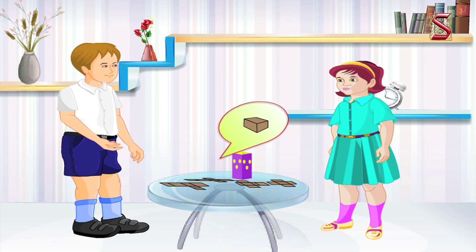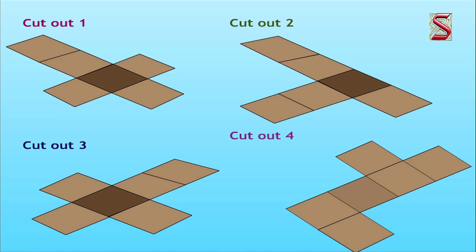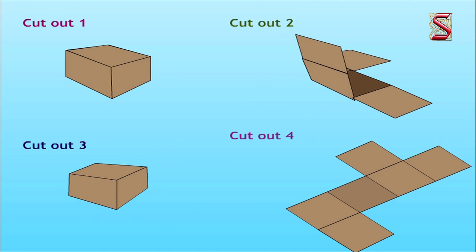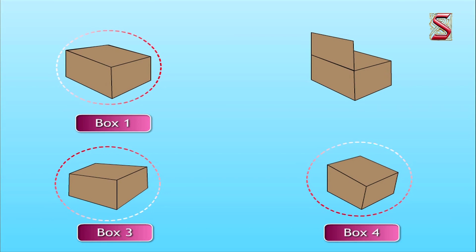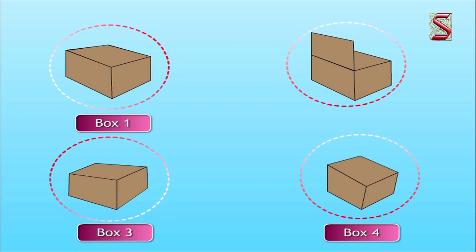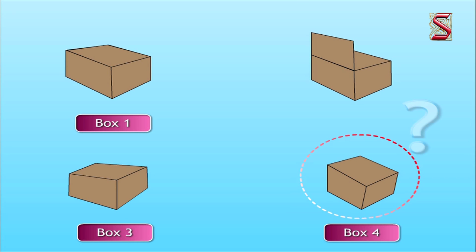Here Rami is trying to fold the cutouts, and yes, she is able to make three boxes. But there were four cutouts. Does that mean Rami could not make a box out of the fourth cutout, or was it not possible to make a box out of that? Let us consider the cutout that has been left.